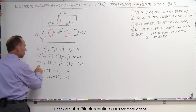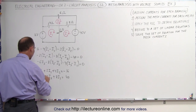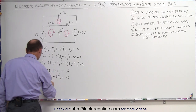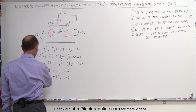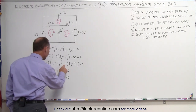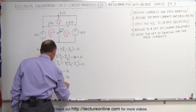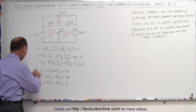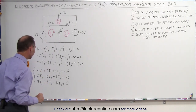Third equation: minus times minus gives plus 4I1, plus 8I2. For I3: minus 6, minus 8 is minus 14, minus 4 is minus 18I3. Equals 0 on the other side of the equal sign. Now we have our three equations and three unknowns in a more simple, straightforward, linear format.